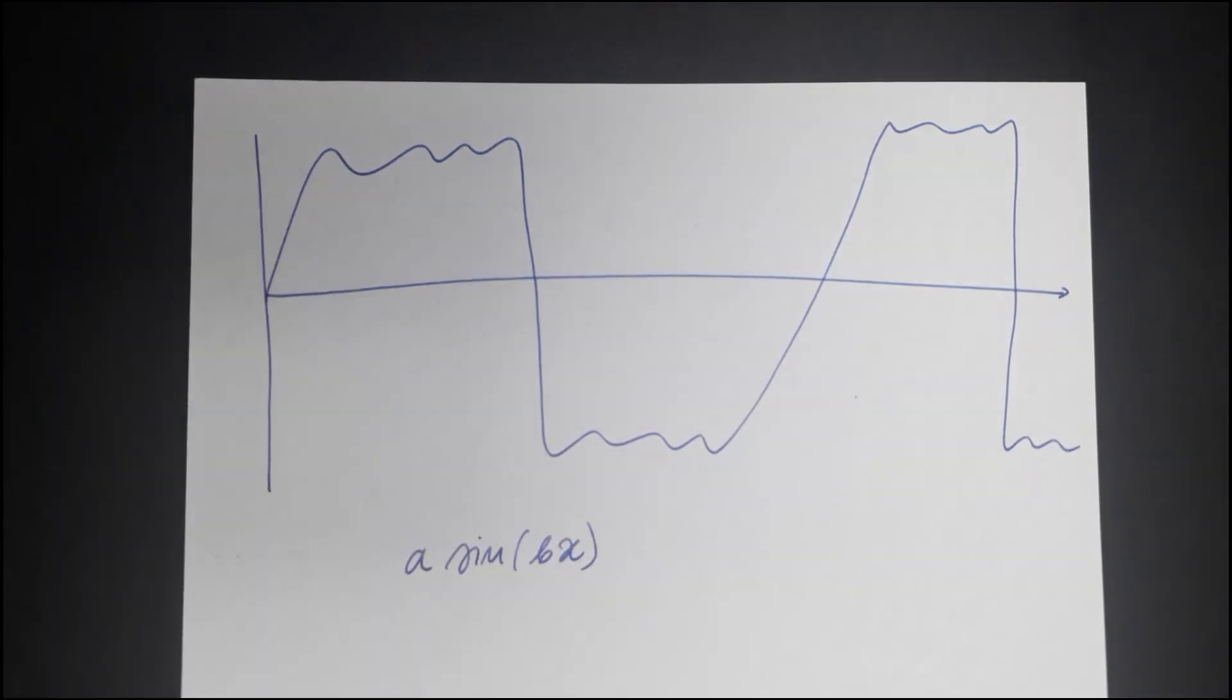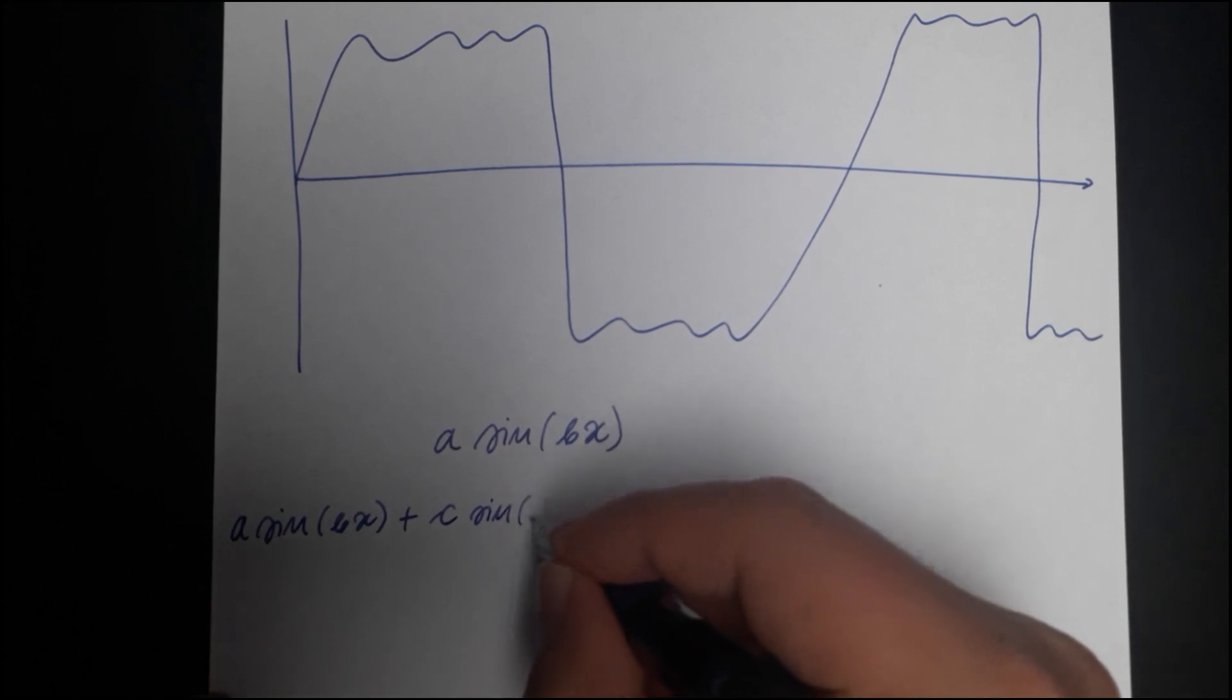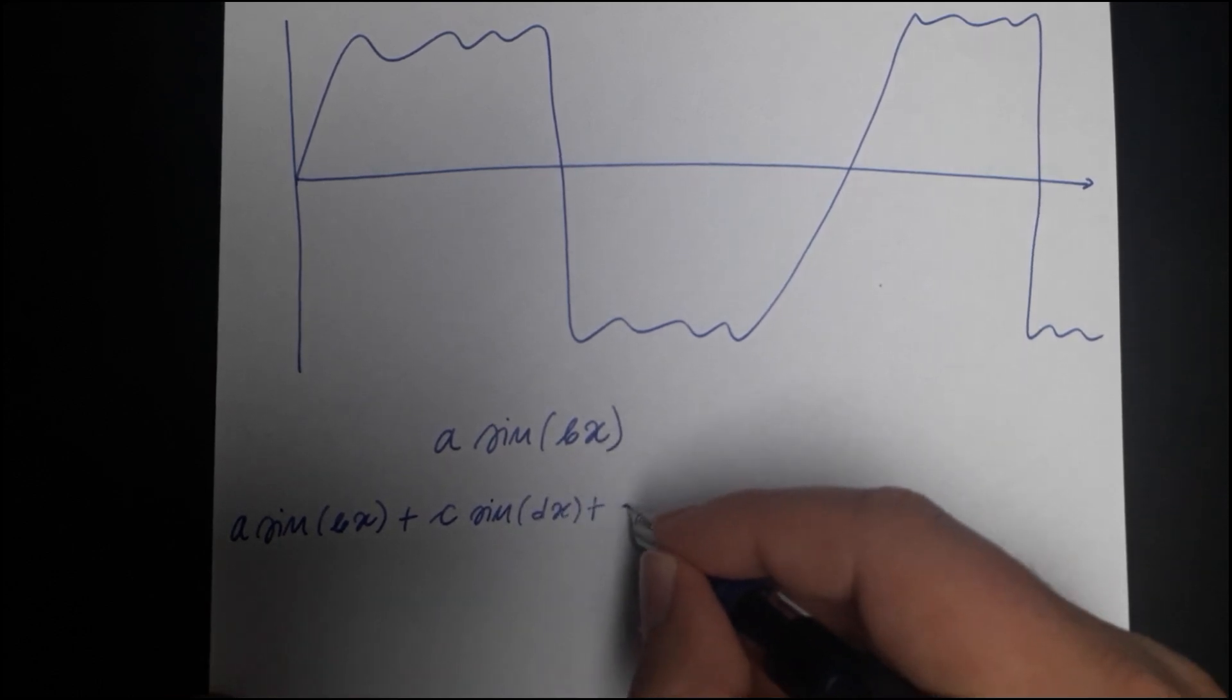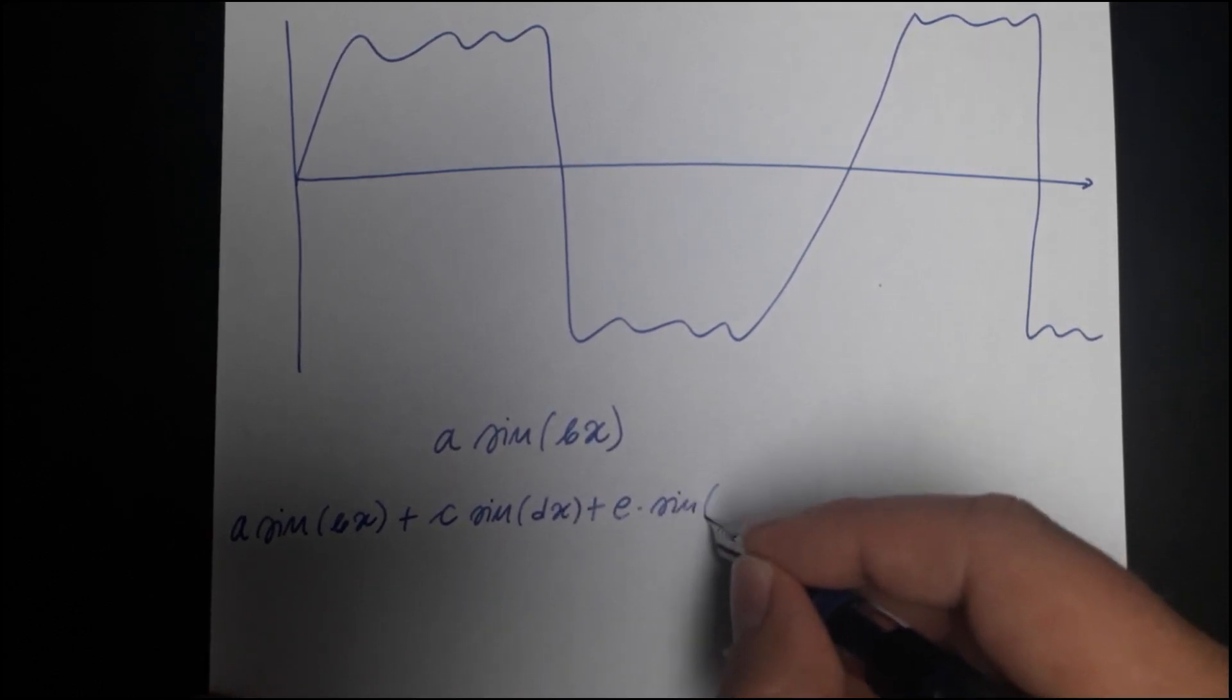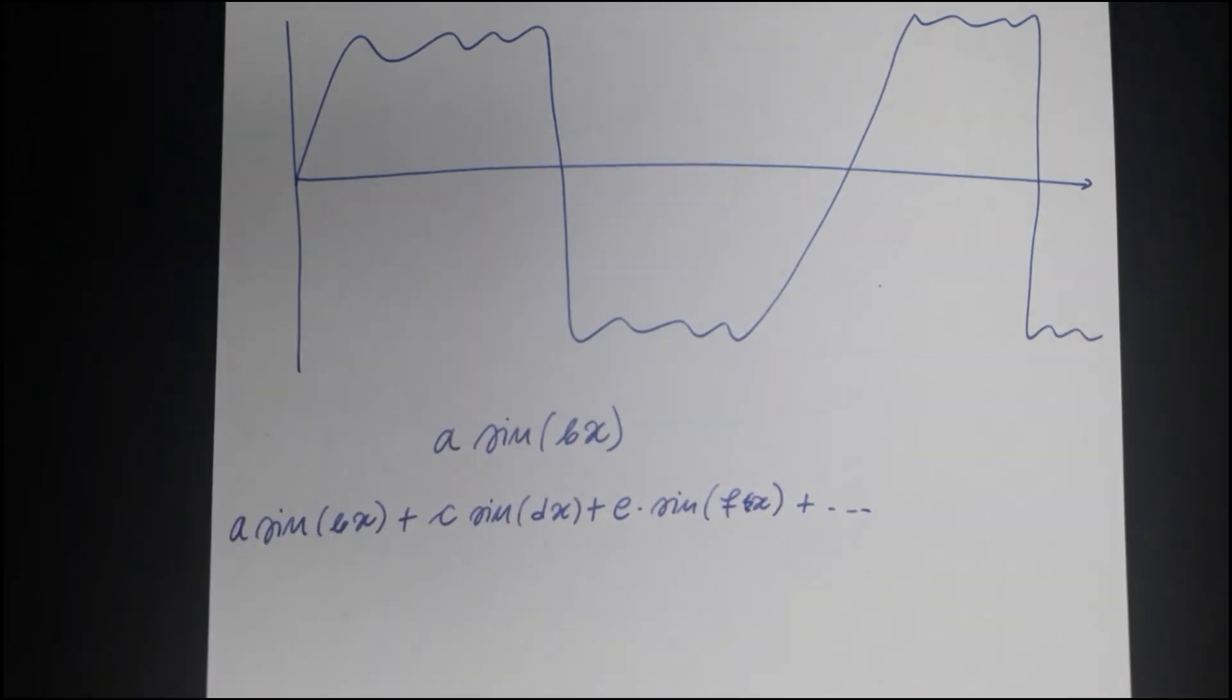Some of them will be big and some of them will be small. So you have to change this coefficient a at the front and you change the frequency b in the argument. And if you add enough of them together like this, plus c times sine of dx, plus e times sine of fx and so on, you can make anything.